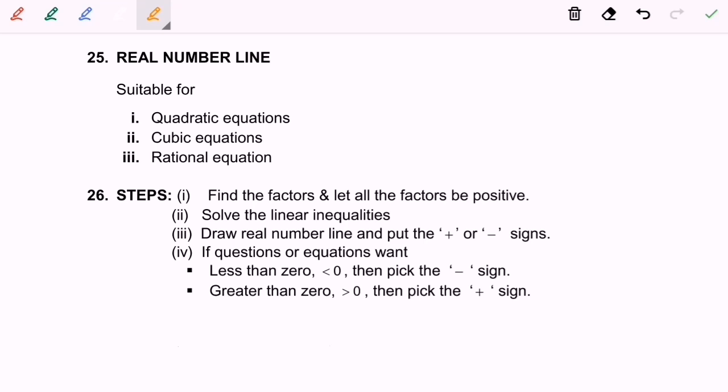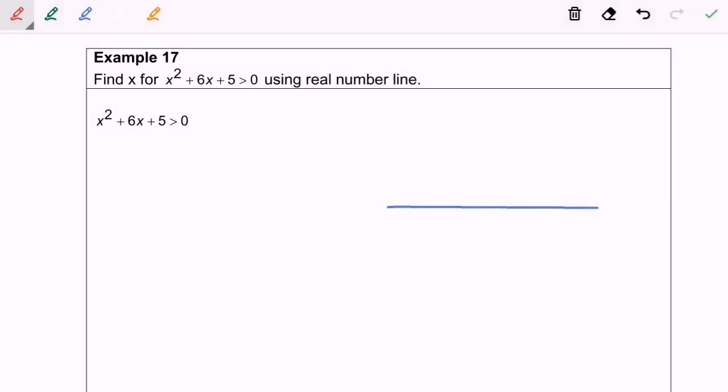26 would be the steps. I'm going to further the discussion in the following example. Here is example 17. Find the value of x for x² plus 6x plus 5 greater than 0 by using the real number line.